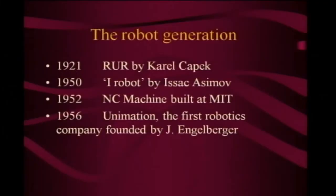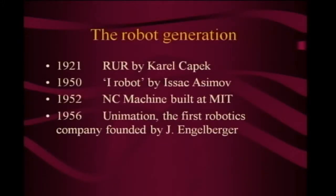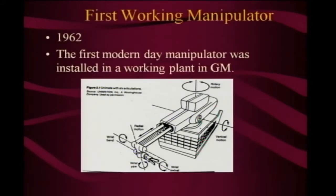The next significant milestone is 1952 — the NC machine being built at MIT. They built an NC lathe in which you could write a program and it would turn a piece. Before that, this was supposed to be a highly evolved human skill. In 1956, the first robotics company was founded by Engelberger — Unimation. And in 1962, the first modern-day manipulator was installed in a working plant at General Motors — a conventional six-axis industrial manipulator.